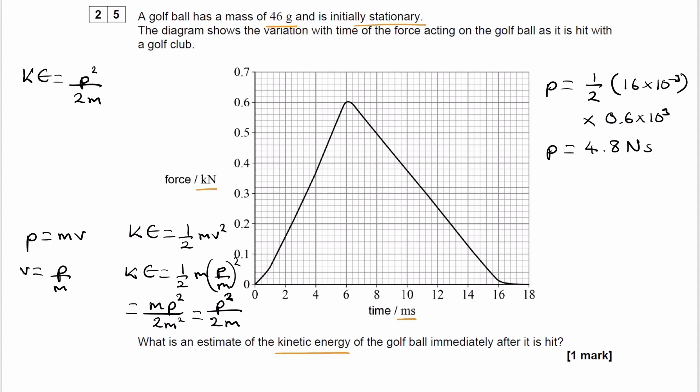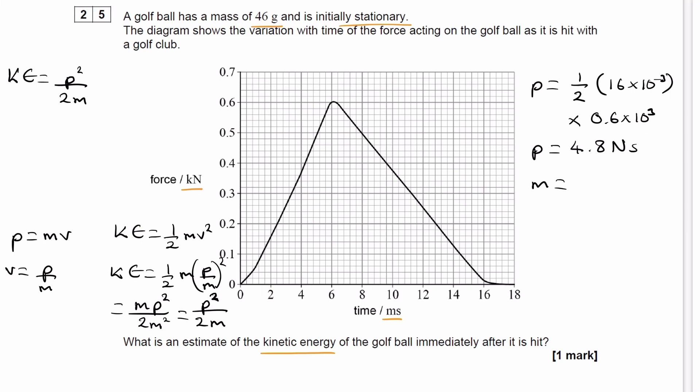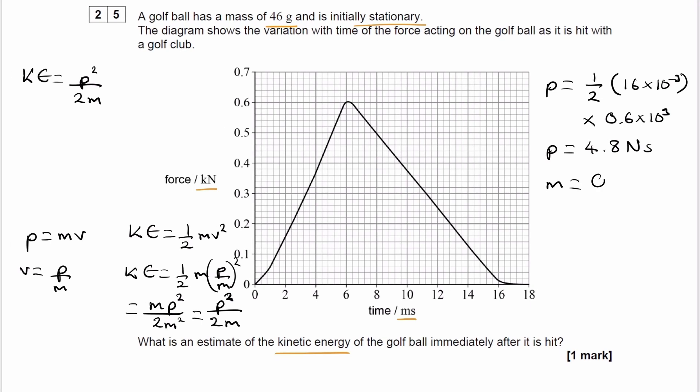We can put in our momentum of 4.8 newton seconds, and our mass. Our mass in kilograms would be divided by 1,000, so that would be 0.046 kilograms. Put that into our kinetic energy equation, and we end up with 250 joules.